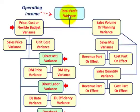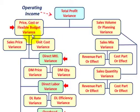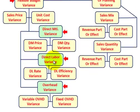Now let's look at the variance analysis structure. Starting with total profit variances — essentially operating income — it breaks down into the flexible budget variance and the sales volume or planning variance. The sales volume variance includes sales mix variance and sales quantity variance, each with revenue and cost components. The flexible budget variance includes a sales price variance, plus a unit cost variance covering direct materials, direct labor, and overhead variances.